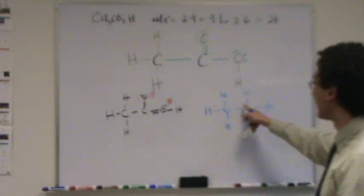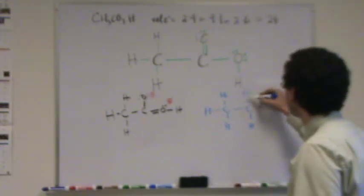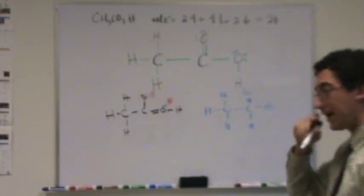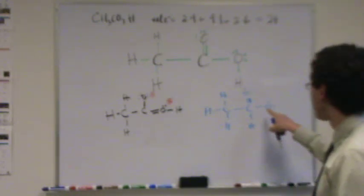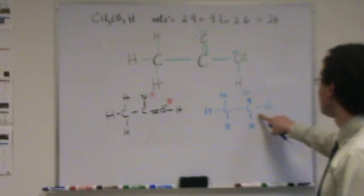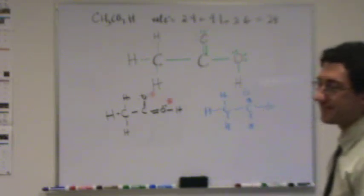It is unfixable because there's no lone pairs around it. If you said, oh, what if I erase this and put it here? Then what happens? You can't actually do that. First, you can't do it. Second, you break the octet on carbon. Now it has 10 around it. There's no way to fix this one.